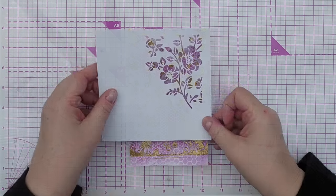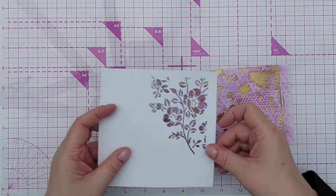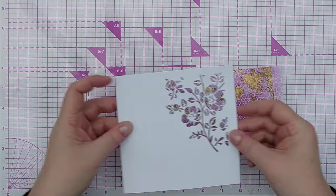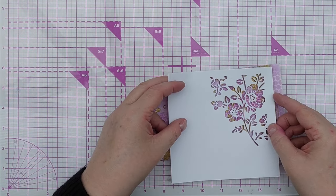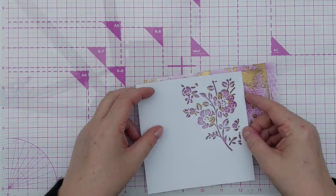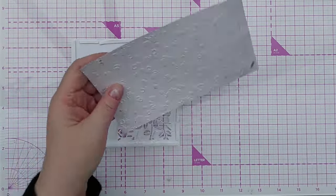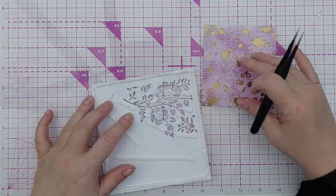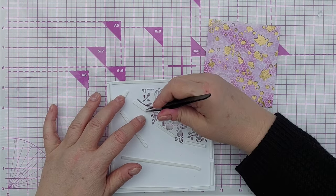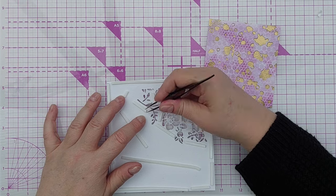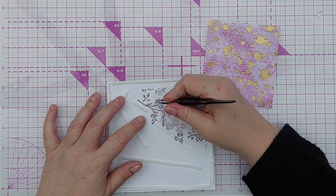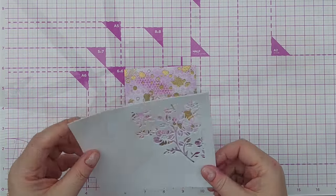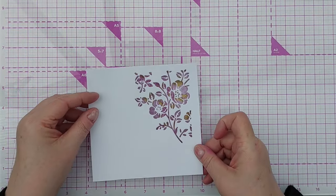All I need to do now really here is choose a bit of this that I would like to show through my flowers. So this bit will do nicely. I'm just going to peel off all the release paper from my foam tape and then I can press this down on there.